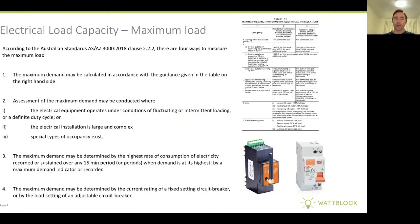According to the Australian Standards 3000, clause 2.2.2, there are four ways to measure the maximum load in the building. It can be calculated in accordance with the guidance given in the table on the right-hand side. The assessment may be conducted where the load operates under fluctuating or intermittent load constraints or a definite duty cycle. The maximum demand may be determined by the highest rate of consumption of electricity recorded or sustained over any 15-minute period by a maximum demand indicator or recorder. And the maximum demand may also be determined by the current rating of a fixed setting circuit breaker or by the load setting of an adjustable circuit breaker.